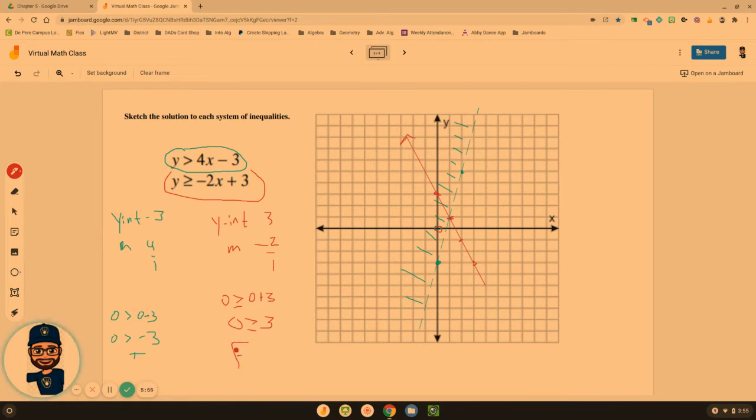Alright, 0 is not greater than 3. So for the red line, nothing underneath it, because that's where 0, 0 would work. So we are only going to be shading up above the red line. So we've got that.